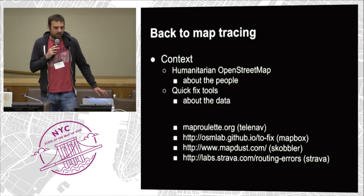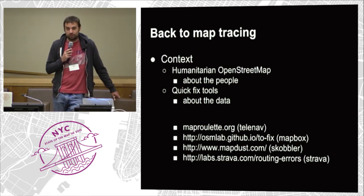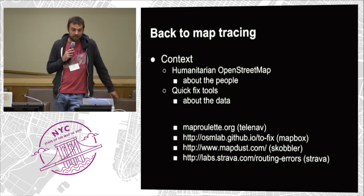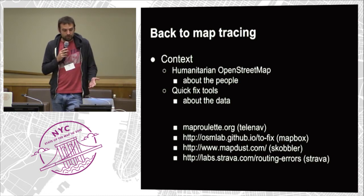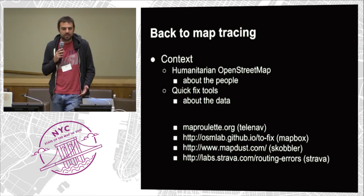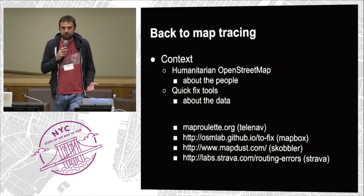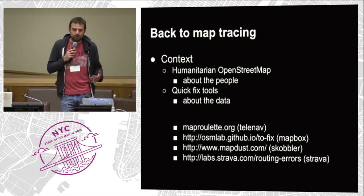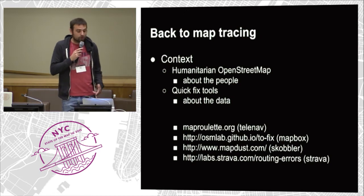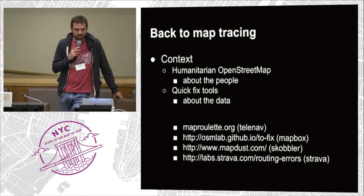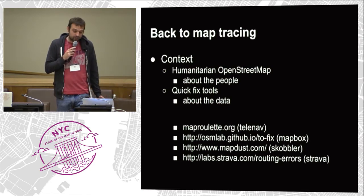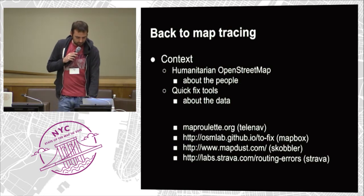There are a couple of different ways of thinking about why you'd edit OpenStreetMap. Humanitarian OpenStreetMap does a great job of motivating people because you're helping others — there's a real need. Then there are quick fix tools where it's about the data — places that have been detected, easy to find, with a reason given for why you should edit. Tools like MapRoulette and TwoFix were talked about earlier today, and we have our own routing errors tool.